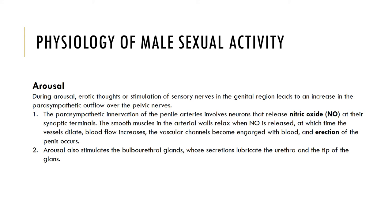Parasympathetic impulses also cause the bulbourethral glands to release their secretions before ejaculation occurs, to lubricate the urethra and tip of the penis. Impotence in a male is when he is unable to achieve or maintain an erection.